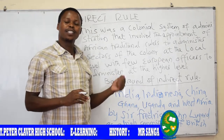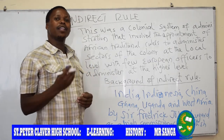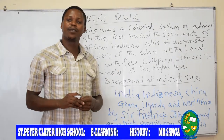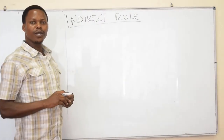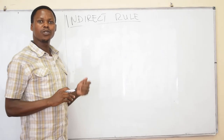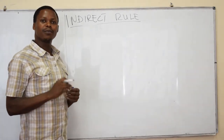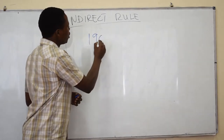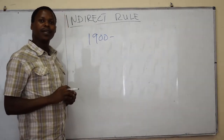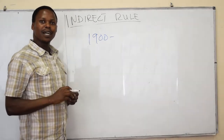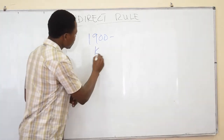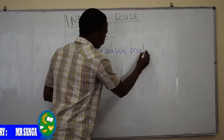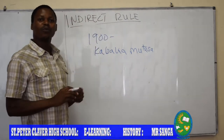After that, Indirect Rule spread to other parts, especially the southern part of Nigeria and the eastern part of Nigeria. Also in Uganda, Indirect Rule was introduced after the British signed the Uganda Agreement in 1900, and they appointed Kabaka to be the king of Uganda.